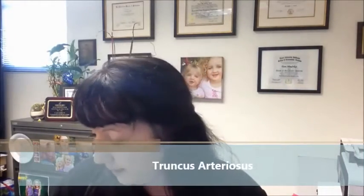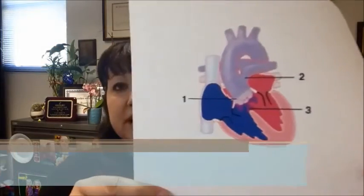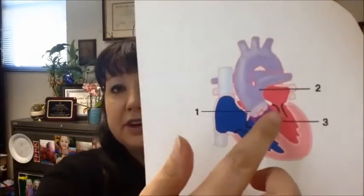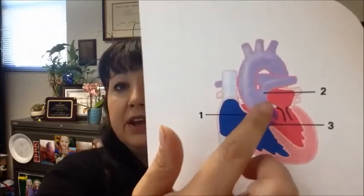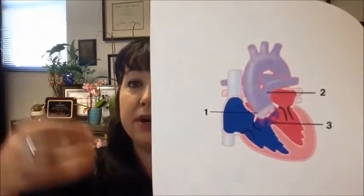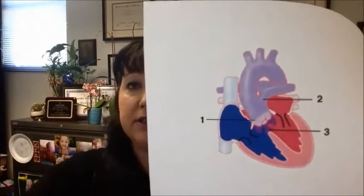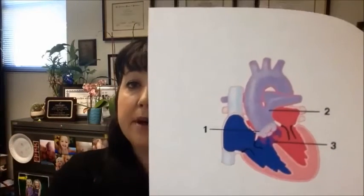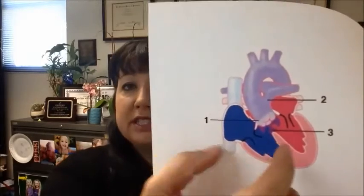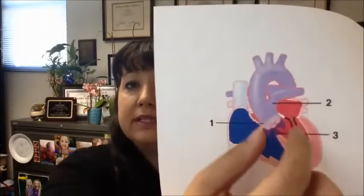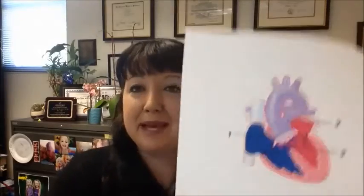One stands for one single trunk coming off of the ventricle — truncus arteriosus. Usually there is a VSD involved and you have one single trunk. Instead of having the aorta coming off the left ventricle and the pulmonary artery coming off the right ventricle, now you just have one single valve, one single trunk coming off. It's completely mixing, which is why it's a cyanotic heart defect.